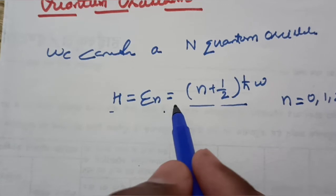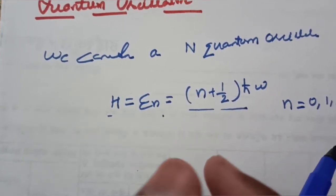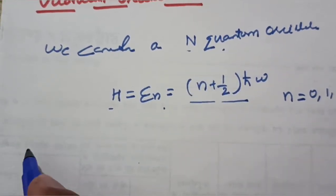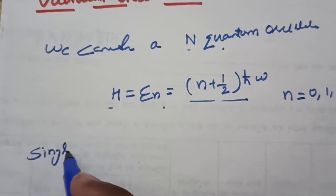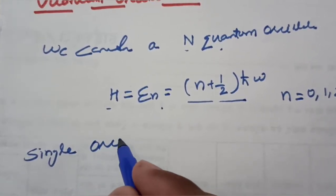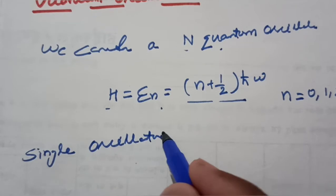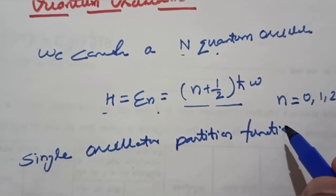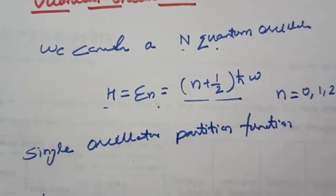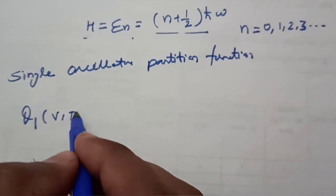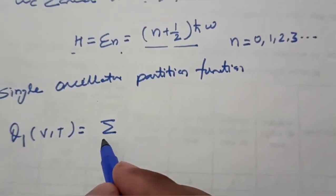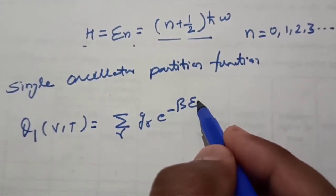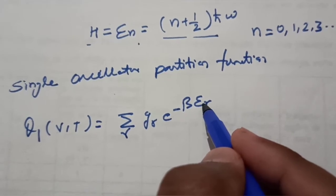On this basis, we shall calculate the single oscillator partition function. For a single particle, this partition function Q1(V,T) can be evaluated as the summation over all states r of g_r times e to the power of minus beta times epsilon_r.